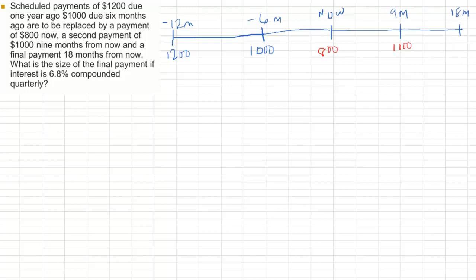We'll call that X since we don't know what it is. Now, the three payments of $800, $1,000, and an unknown amount X due in 18 months are to be used to replace the two payments of $1,200 and $1,000 from 12 months ago and 6 months ago. The interest rate is 6.8% compounded quarterly. And we're asked to find the final payment. The easiest thing to do is to use 18 months as the focal date.